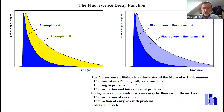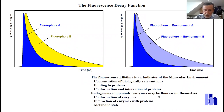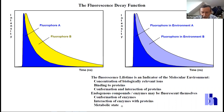The lifetime tells us something about the concentration of biologically relevant ions, binding to proteins, conformation and interaction of these proteins with other proteins. It becomes especially interesting when we talk about endogenous compounds—enzymes, coenzymes, and proteins—which are always present in biological systems. In these cases it tells us something about the conformation of the enzymes themselves, their interaction with proteins, and the metabolic state. This is a lot of information.